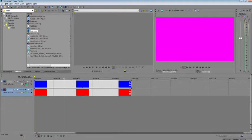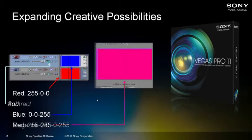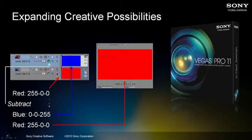If we set the top track to Subtract mode, we get red. Starting with red (255, 0, 0) minus blue (0, 0, 255): 255-0=255, 0-0=0, and 0-255=0 because in RGB you can't go below 0. So the result is 255, 0, 0 — which is exactly the recipe for red. Subtraction really shows the bottom-up flow well: starting with red and subtracting blue gives red, but if you started with blue and subtracted red, you'd get a different result.